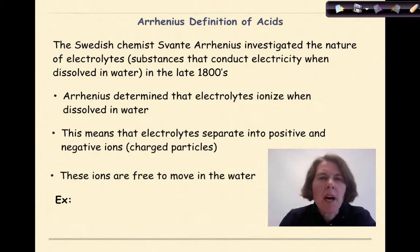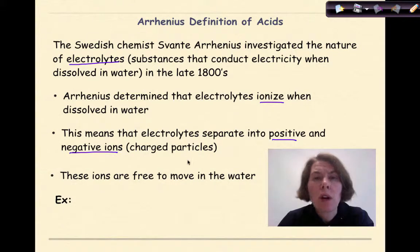Let's start off first by talking about the definition of an Arrhenius acid. The Swedish chemist Svante Arrhenius investigated the nature of electrolytes, substances that conduct electricity when dissolved in water, in the late 1800s. Arrhenius determined that electrolytes ionize when they dissolve in water. This means that electrolytes separate into positive and negative ions, or charged particles. These ions are free to move in the water.